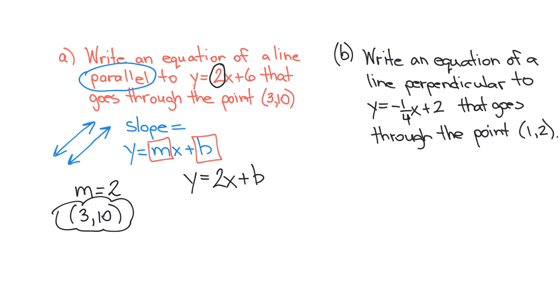Well, we know that x is the 3, and y is the 10. So wherever I see x, I'll put a 3. Wherever I see y, I'll put a 10. So I'll have 10 equals 2, not x, but 3, plus b. And now I can solve for the y-intercept.